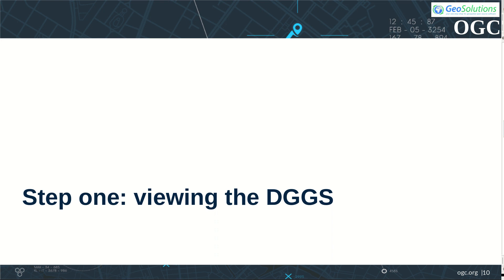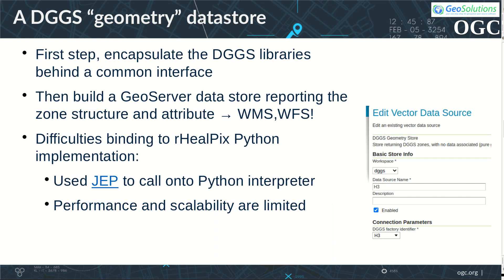The first step in the server implementation has been visualizing DGGSs. In order to do that, a purely geometric DGGS data store has been implemented in GeoServer, communicating to the libraries through a common interface. The store can be configured like any other store and can be used as a data source for WMS or WFS services. Integrating the RealPix Python library in the GeoServer Java runtime proved difficult; the JEP project has been used to bridge the gap. However, lack of support for multi-threading in Python means performance and scalability are limited.